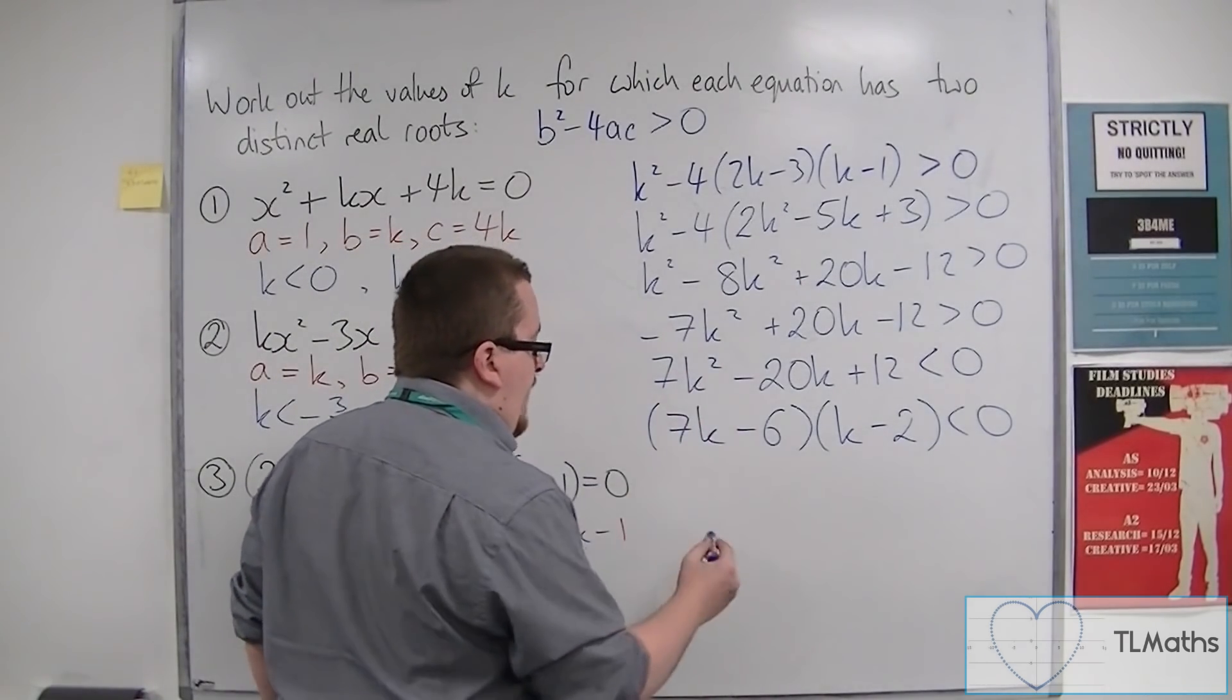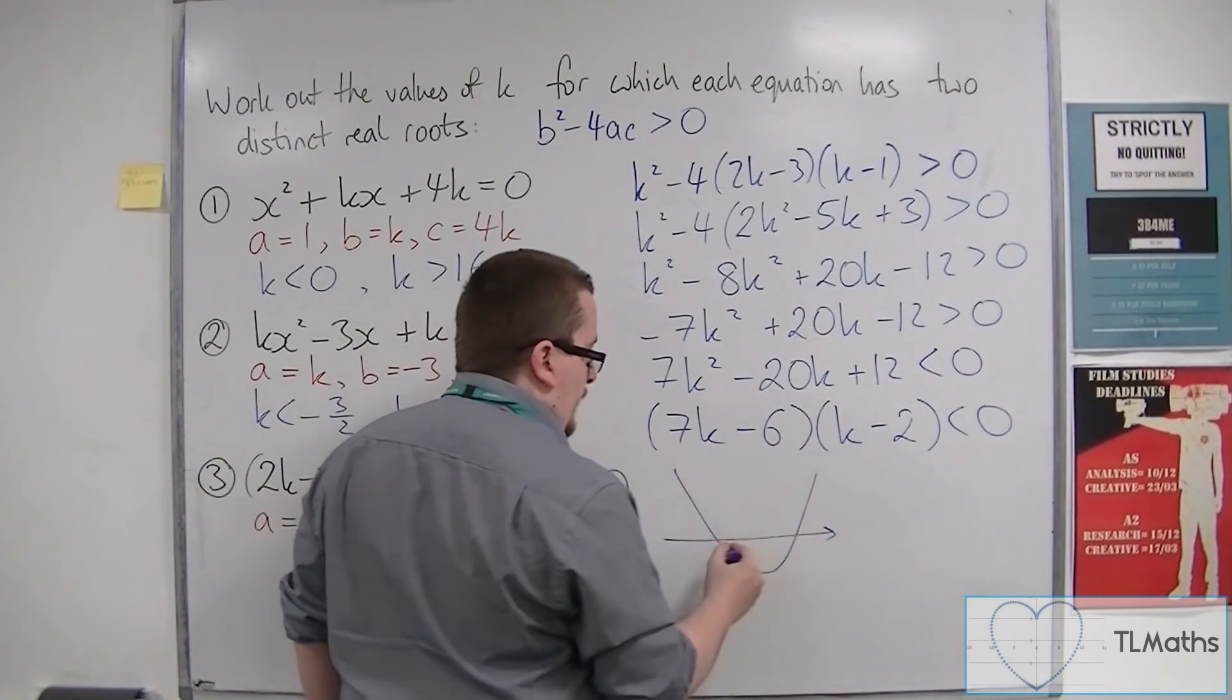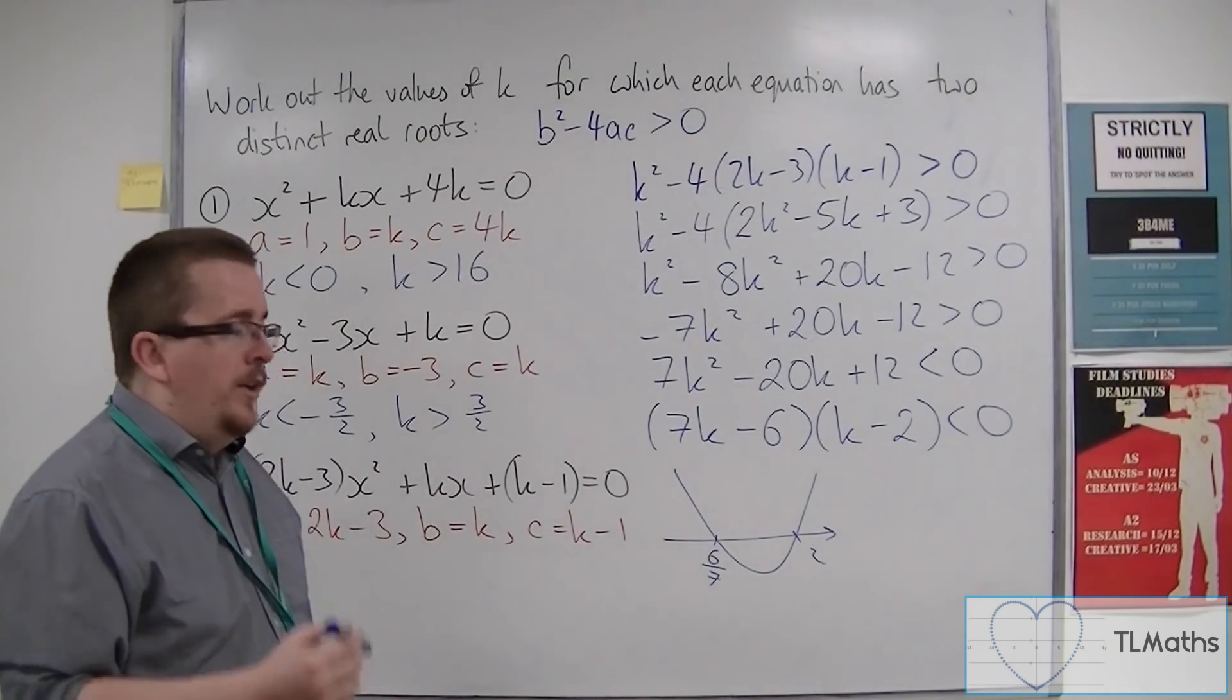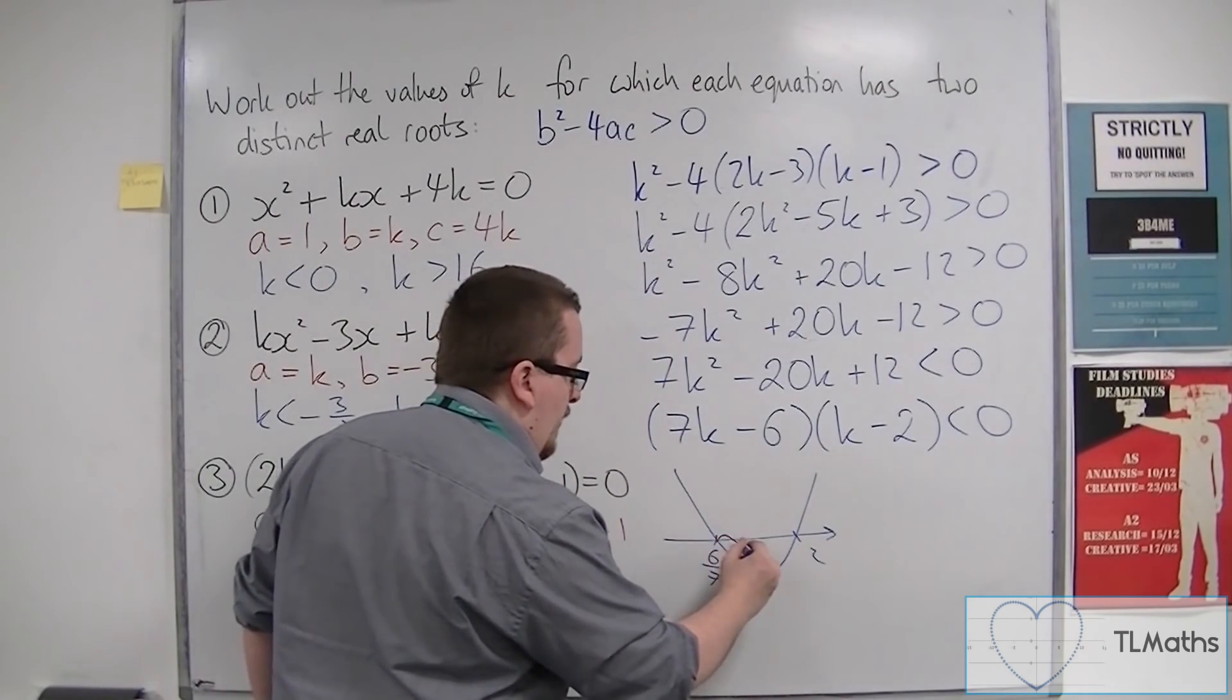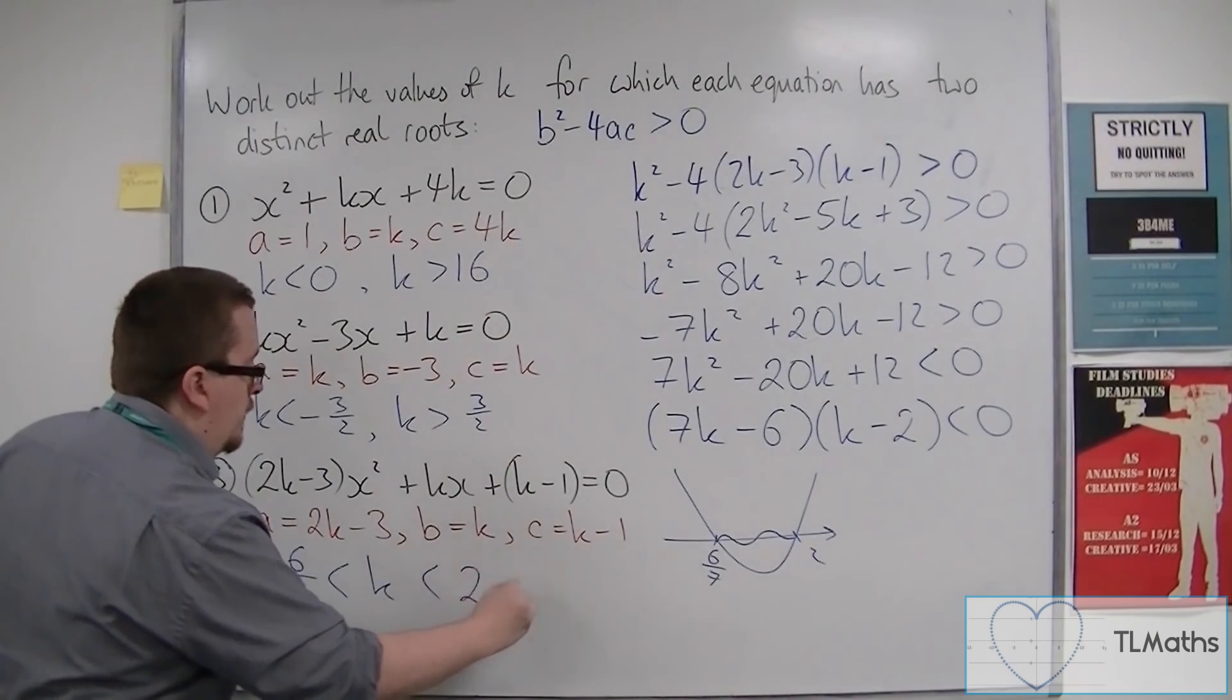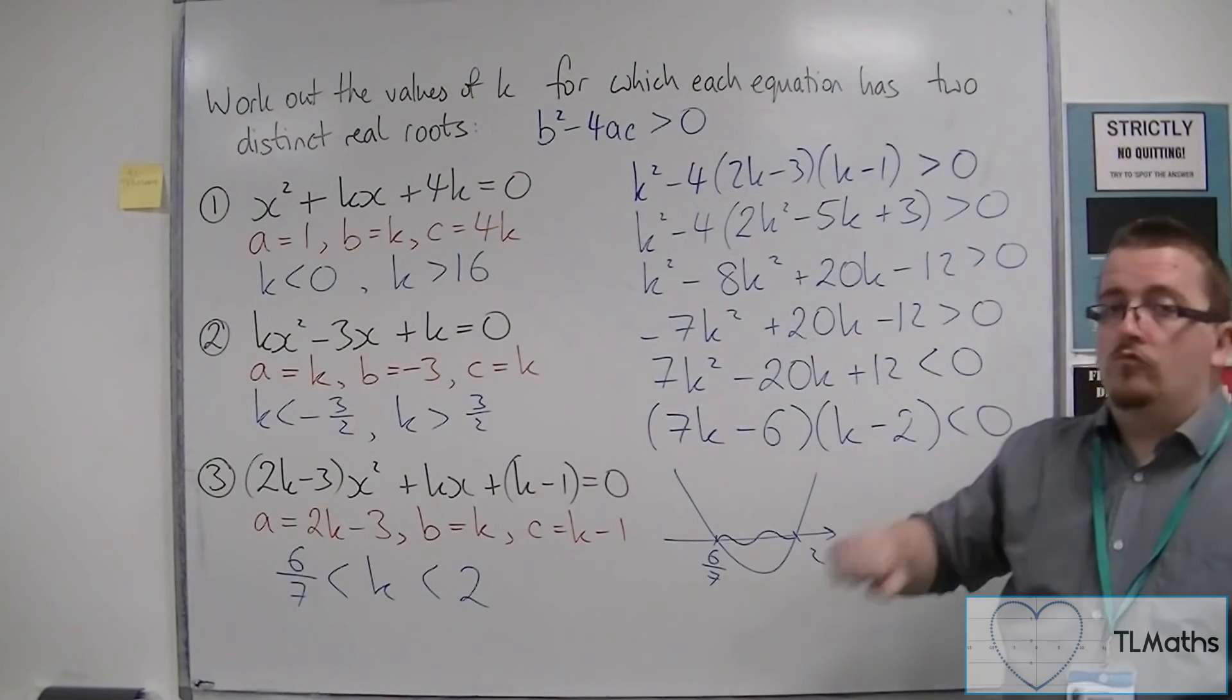So then sketch it. So that's going to be 6 over 7. And that's going to be 2. So 6 over 7 is less than 2. So that's where it crosses the k-axis. So where is the parabola below the k-axis this time? It's below it, between those two values. And so the solution is that k must be between 6 sevenths and 2. In order for this quadratic to have two distinct real roots. And that's how we can solve these types of problems.